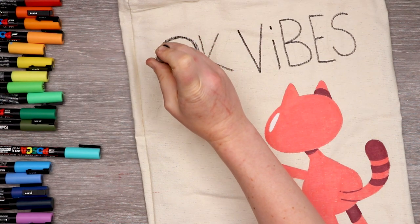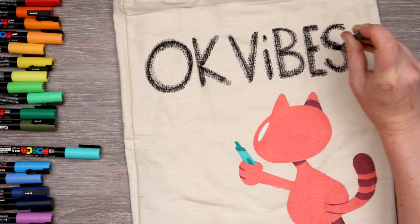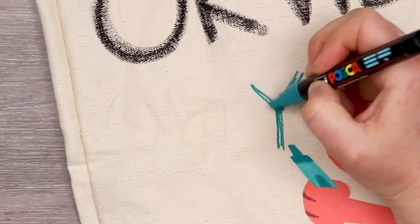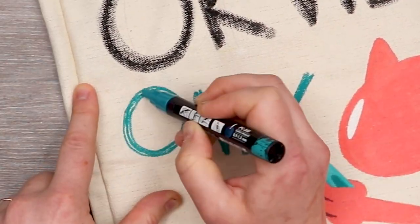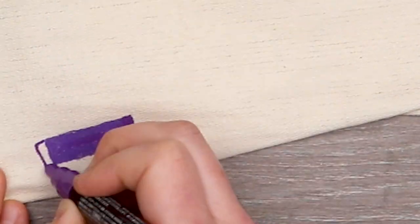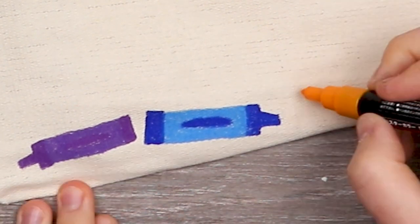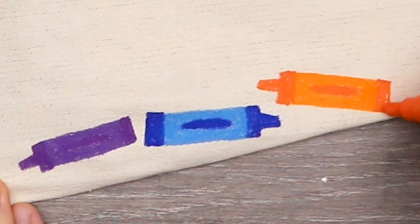So the tote bag says okay vibes only because it's just something I say a lot. I don't like negativity, but I also don't like toxic positivity. So I like to say okay vibes only, just you know, just passing vibes. I added some crayons on the bottom just to add a little bit more color and just a little more something something at the bottom. And this one turned out pretty cute too.